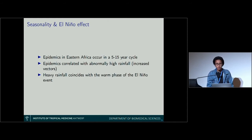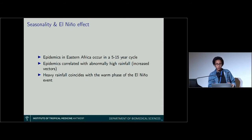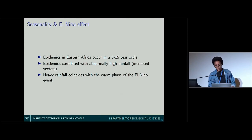There are what we call the effects of seasonality or El Niño. Epidemics in Eastern Africa occur in cycles of five to fifteen years — one reason we don't know too much about the disease, as people forget about it for six years and then an outbreak appears. Those epidemics are highly correlated with abnormally high rainfall, which creates ideal breeding conditions for mosquitoes, increasing the number of vectors and transmission. These heavy rainfalls are also correlated with El Niño, an environmental phenomenon bringing heavy rainfall especially to Eastern Africa.